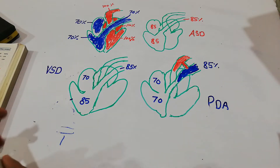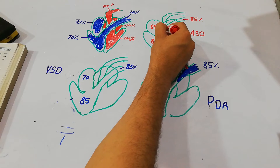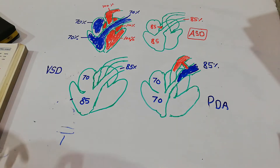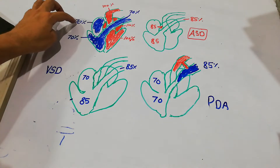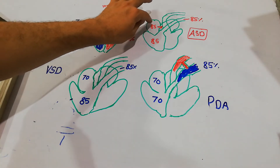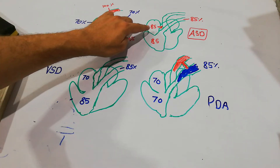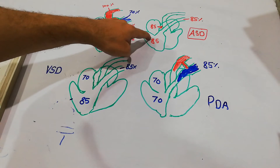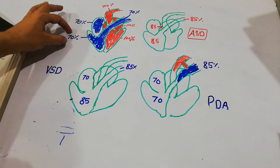The oxygenated blood from the left atrium can come into the right atrium through this ASD — atrial septal defect. When 100 percent oxygenated blood from the left atrium mixes with the 70 percent oxygenated blood in the right atrium, the final oxygen saturation becomes 85 percent. This 85 percent saturated blood then goes into the right ventricle, so the saturation of blood in the right ventricle is also 85 percent in atrial septal defect, compared to the normal 70 percent.